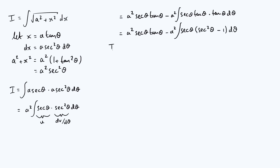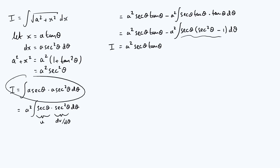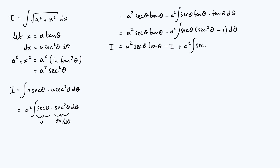Something quite nice happens here. The left-hand side is just I. Expanding the brackets gives two separate integrals: minus a squared times the integral of sec cubed θ dθ — which is exactly I itself — plus a squared times the integral of sec θ dθ. Moving the minus I to the other side gives 2I, so dividing through by 2, each term acquires a factor of one half.